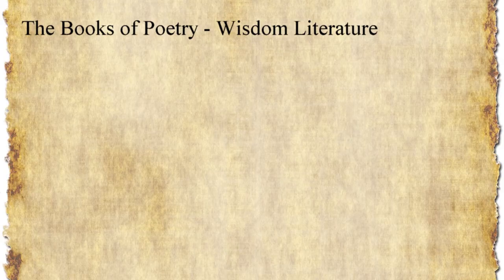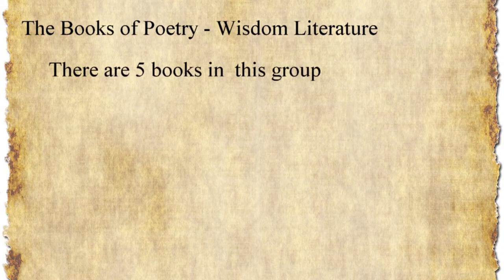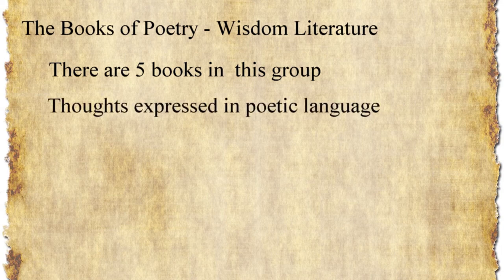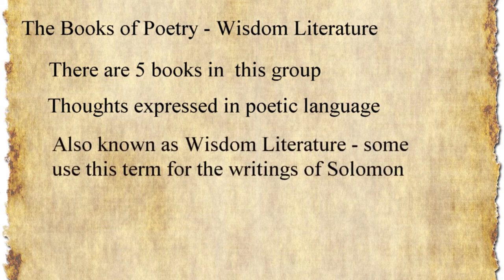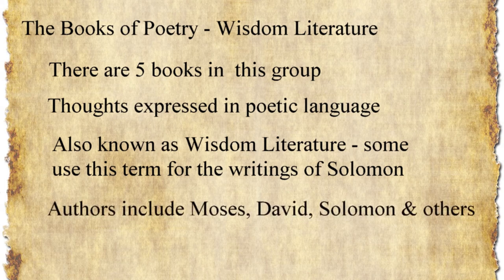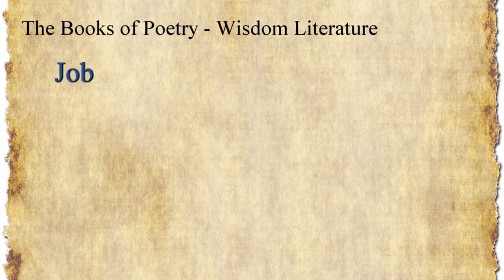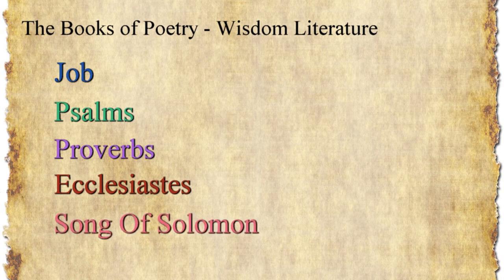The books of poetry, or wisdom literature: there are five books in this group. They are referred to as the books of poetry due to the literary forms used to express the ideas in the books. Based on the content of the writings, they're also referred to as the wisdom literature, although some writers reserve this term specifically for the writings of Solomon. There are multiple authors who contributed to these books, including Moses, David, and Solomon, as well as others. These books are Job, Psalms, Proverbs, Ecclesiastes, and the Song of Solomon.